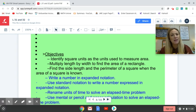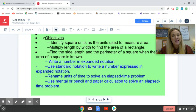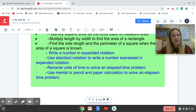So this kind of backwards thinking is really getting your brain ready to do more work with square roots. Now into expanded notation: writing a number in expanded notation, using standard notation to write a number expressed in expanded notation, so doing the reverse of what I just said. Renaming units of time to solve an elapsed time problem. Use mental or pencil and paper calculation to solve any elapsed time problem.